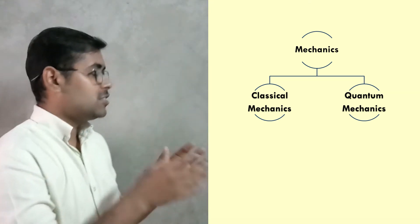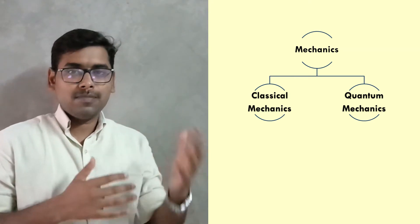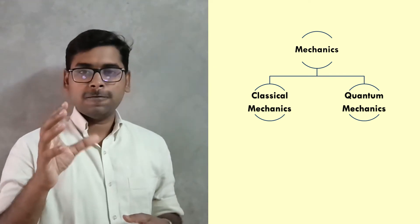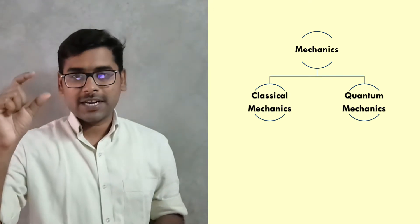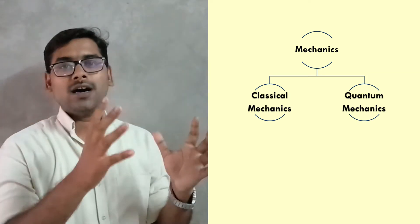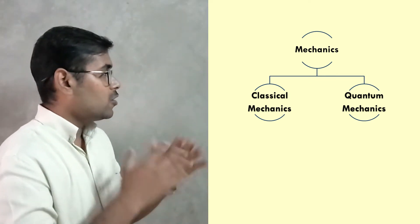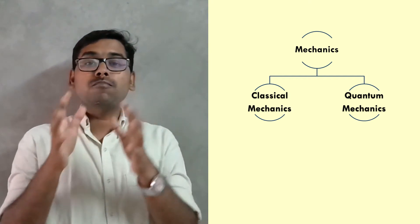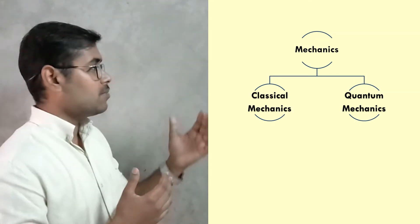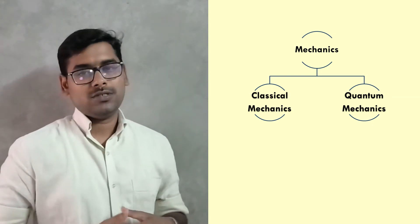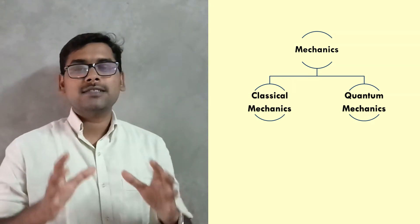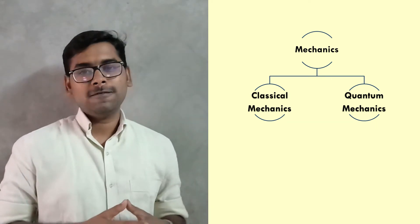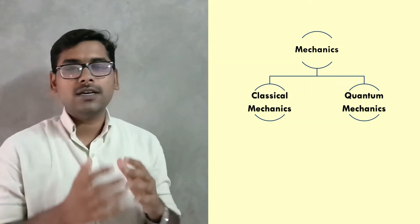Classical mechanics is the branch which studies the motion of macroscopic objects — objects which we can see with our eyes, like a small cricket ball or a bigger object like a star or a planet. On the other hand, quantum mechanics is the study of motion of microscopic objects, like electrons. Classical mechanics is one of the oldest branches in physics, while quantum mechanics is a more recent branch. Everything we study in this chapter comes under classical mechanics.